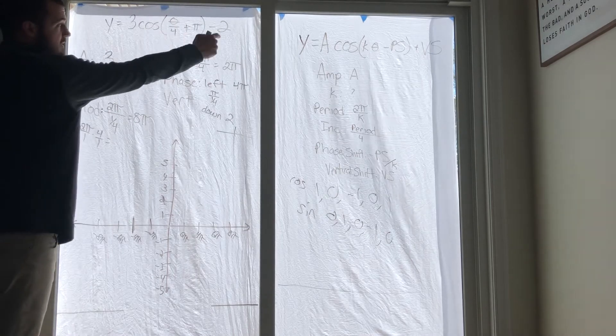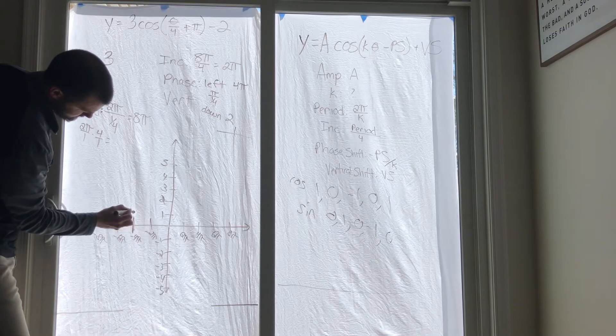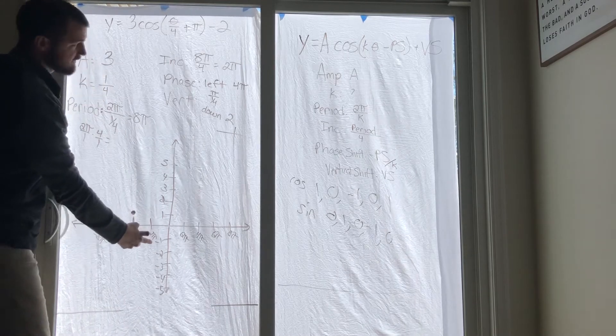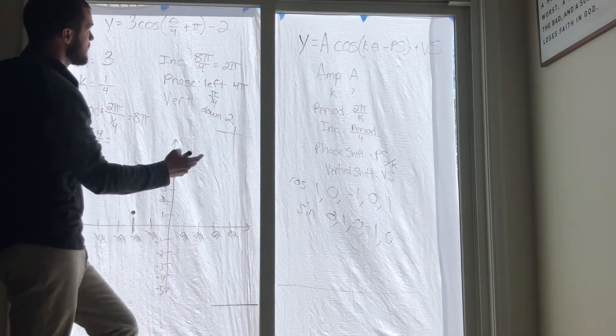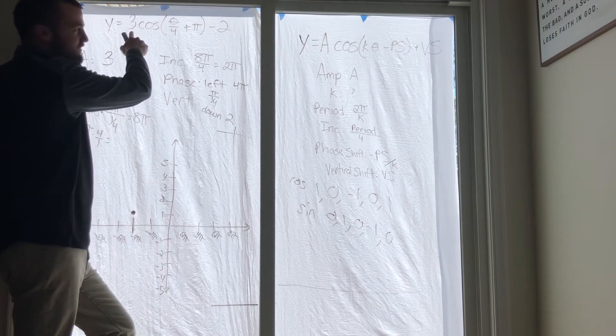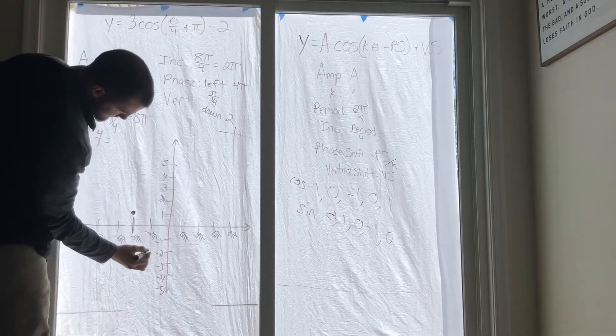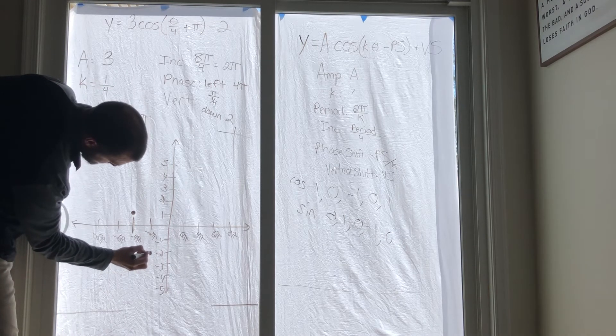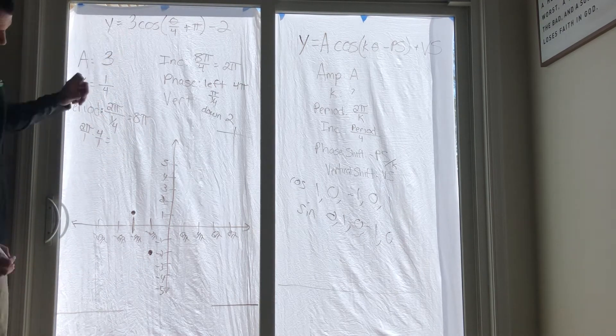At negative 2π, we're going to use the zero: 0 times 3 is 0, minus 2 is negative 2. And again, that looks right because our amplitude is 3, and look, we have a distance of 1, 2, 3 in between those two points. You should always have that.